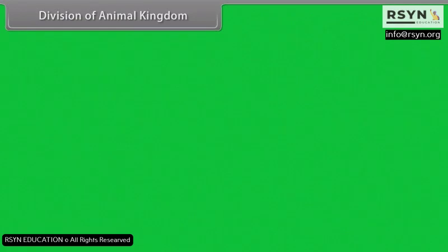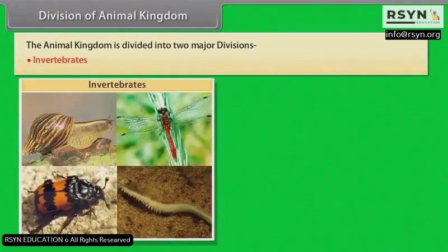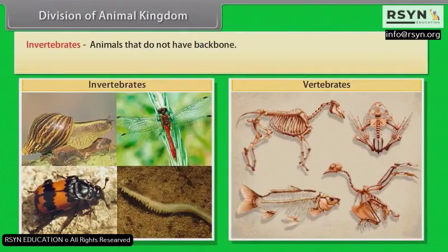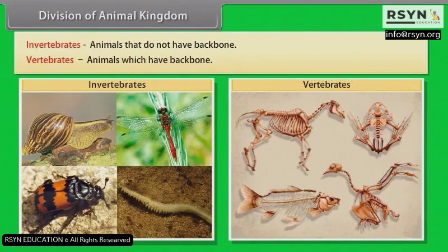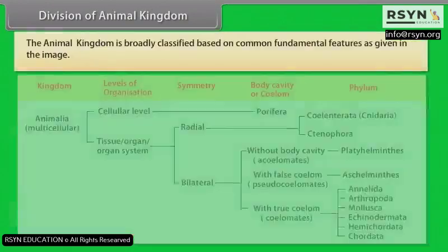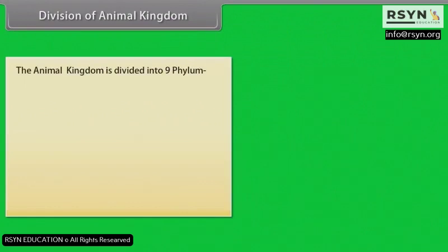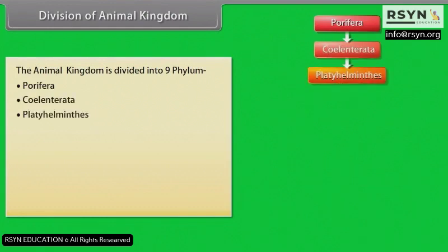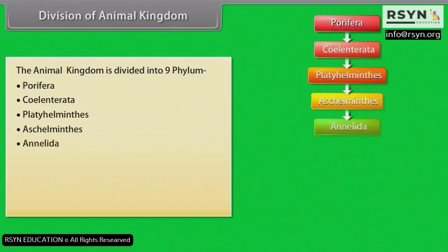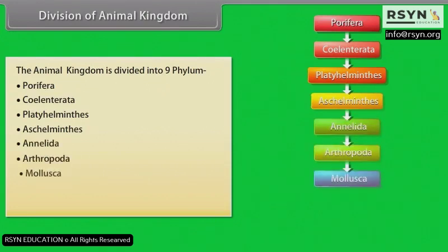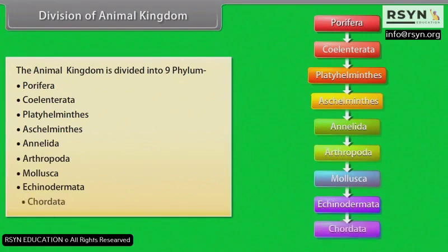The animal kingdom is divided into two major divisions: invertebrates and vertebrates. Invertebrates are animals that do not have a backbone. The animal kingdom is broadly classified based on common fundamental features. It is divided into nine phyla: porifera, coelenterata, platyhelminthes, aschelminthes, annelida, arthropoda, mollusca, echinodermata, and chordata.